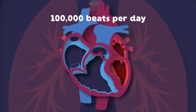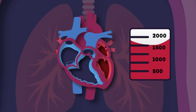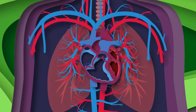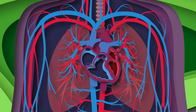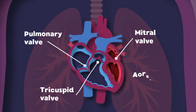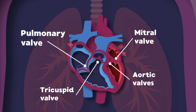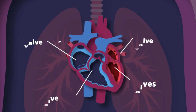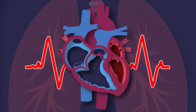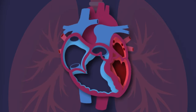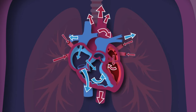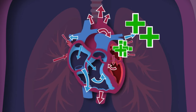I can beat more than 100,000 times in one day, pumping about 2,000 gallons of blood through your body. There are about 60,000 miles of vessels in your circulatory system — I always keep them full. I have four valves that open and close to control the blood through me: the tricuspid, pulmonic, mitral, and aortic valves. I'm your heart — take care of me please.